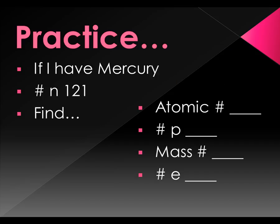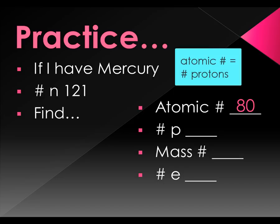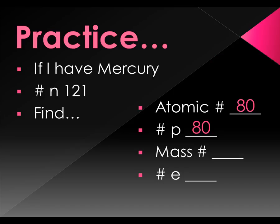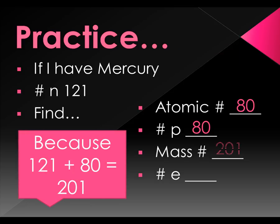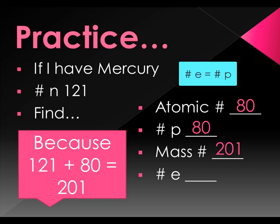Next one, I have mercury, and I know this mercury that I have has 121 neutrons. The atomic number of mercury, he's kind of hard to find, is 80. Number of protons is 80. For mass number, the definition of mass number is protons plus neutrons, so I add those up. Mass is 201. Electrons is always equal to protons, so that is 80.